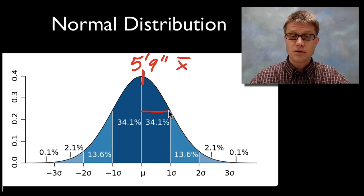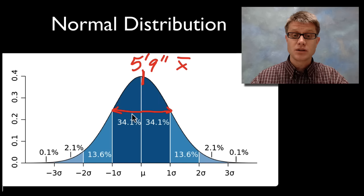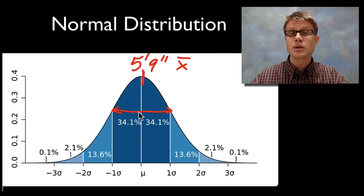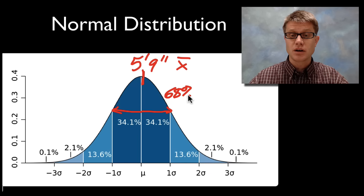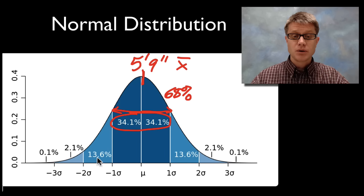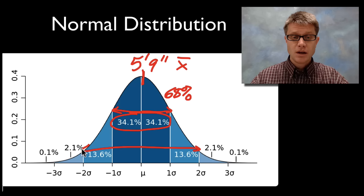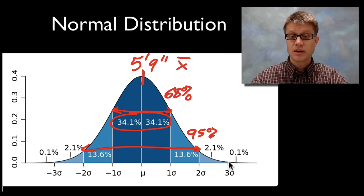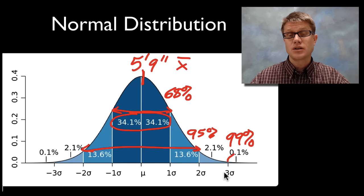This dark area is going to be one standard deviation above and one standard deviation below the mean. About 68% of the individuals are going to be in this area — one standard deviation above and below. If we look at two standard deviations, 95% of individuals are going to be within two standard deviations from the mean. And then finally, 99% of individuals are going to be within three standard deviations of the mean.